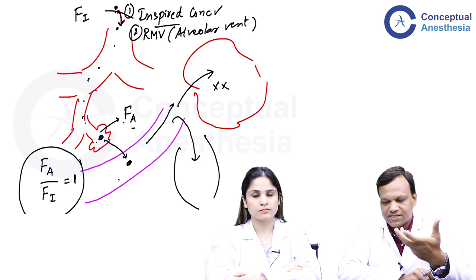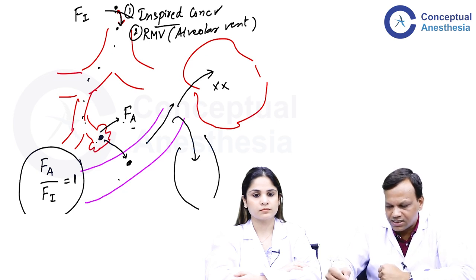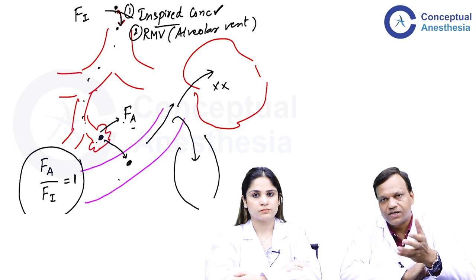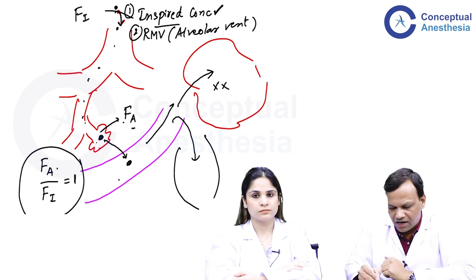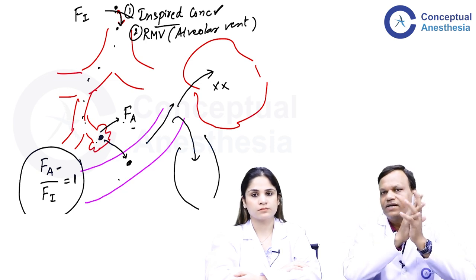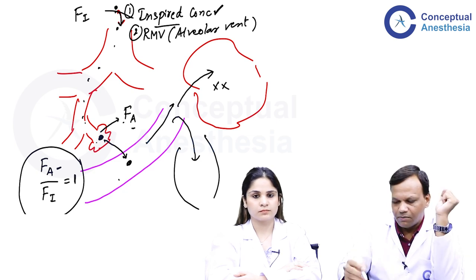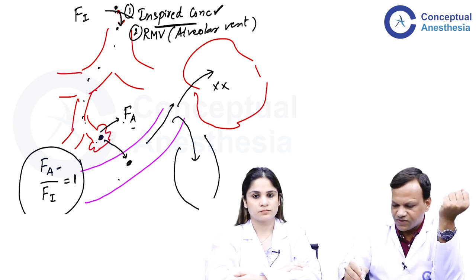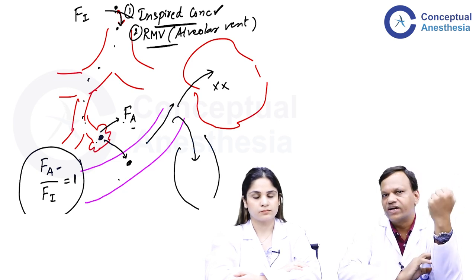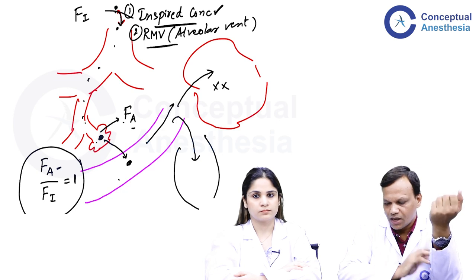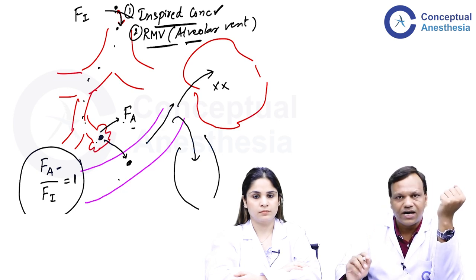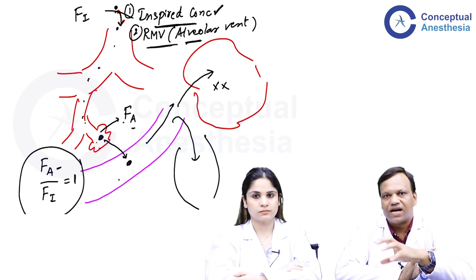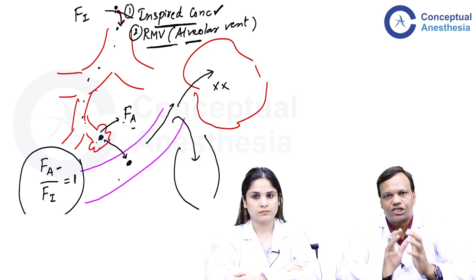To speed the onset of anesthesia: first, increase the concentration in the inspired air so the alveoli equilibrate more quickly. We cannot increase it too much because that causes other problems. Second, we can increase respiratory minute volume or alveolar ventilation. However, alveolar ventilation depends on another very important property — blood solubility, or blood-gas partition coefficient.